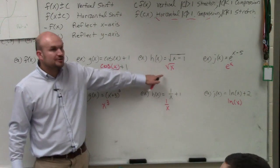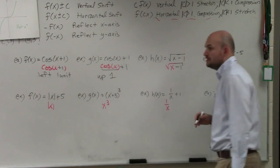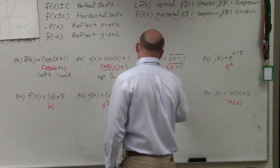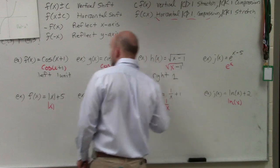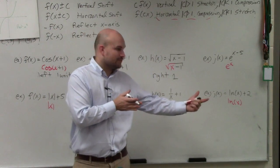Over here, you can see I'm subtracting the one inside of the function. So therefore, that's a transformation of going to the right one. So if positive takes me to the left, negative is going to take me over to the right.